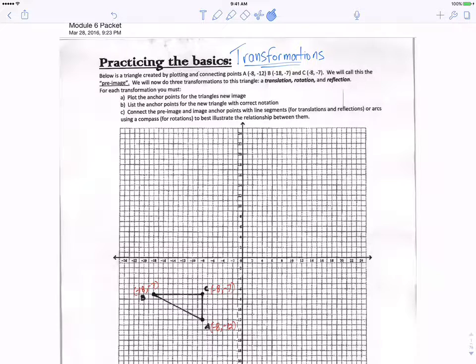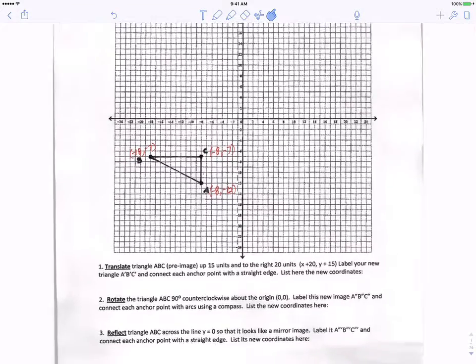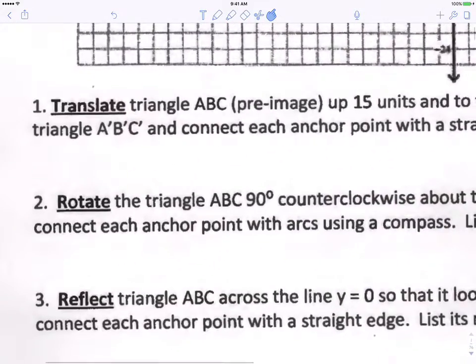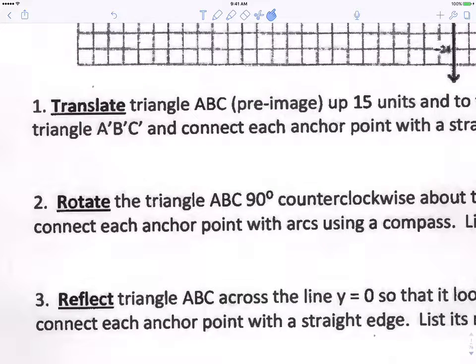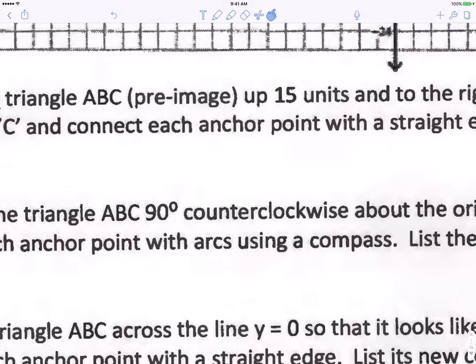Hey back again Math 1. We're looking at number 2 on practicing the basic transformations. Number 2. It says rotate the triangle ABC 90 degrees counter-clockwise. Now let's talk about what that means.